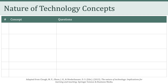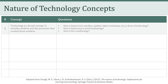This brings us to ten concepts related to the nature of technology. The first concept is that technology is broad — it includes artifacts and the processes that created those artifacts. Examples of technology include, among other things, tools, machines, things, symbols, objects, and techniques. Some questions we can continuously ask ourselves: How is Google a form of technology? How is democracy a social technology? How is fire a technology? You should challenge yourself and ask: how is this thing, this object, this process, this technique — how is it or is it not a technology?